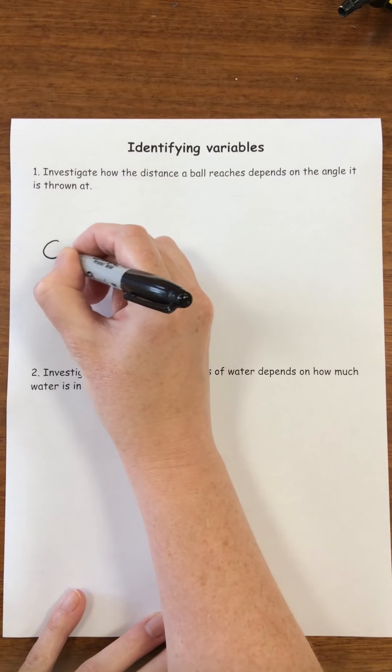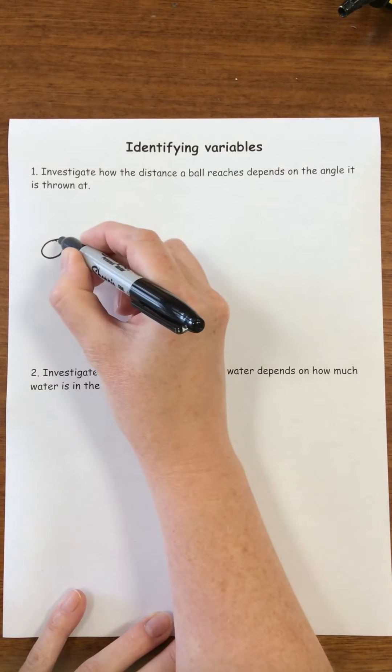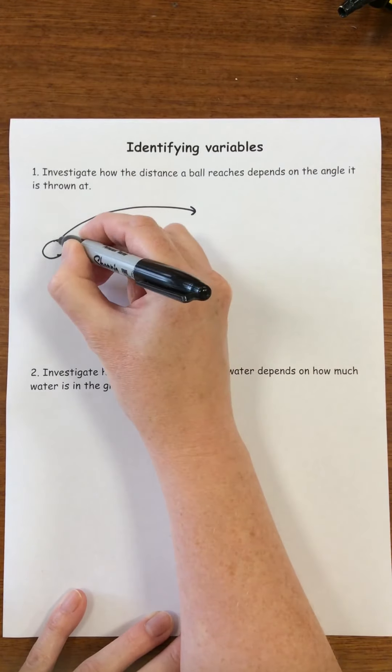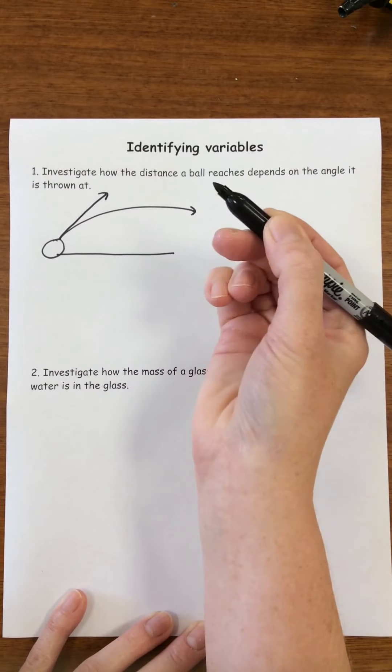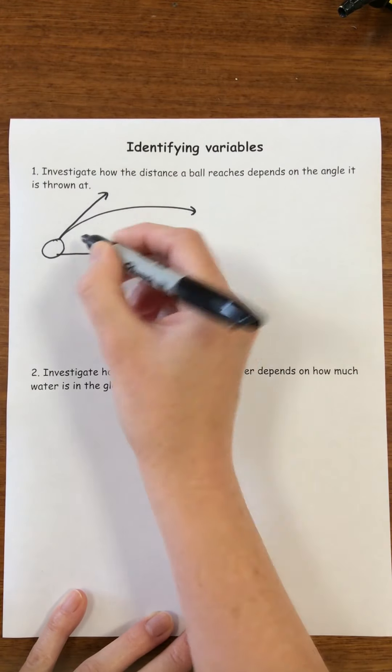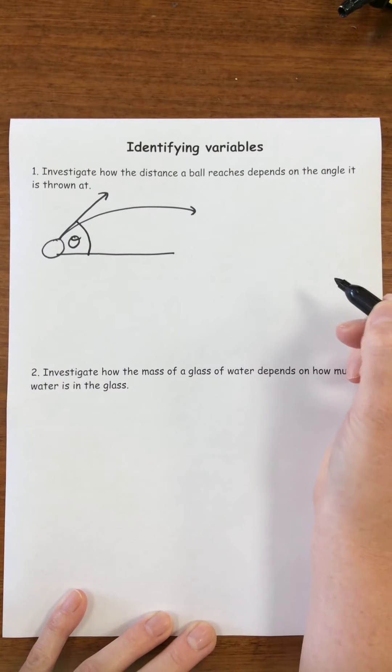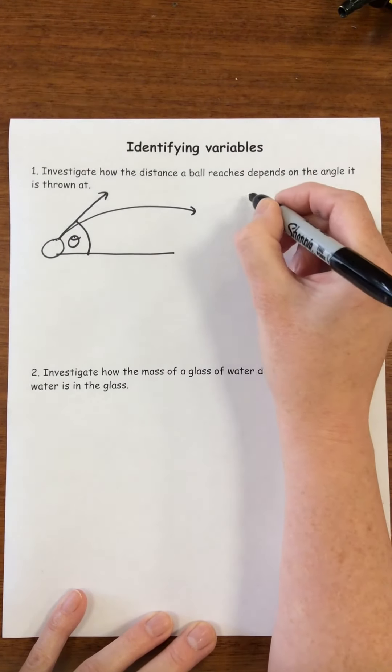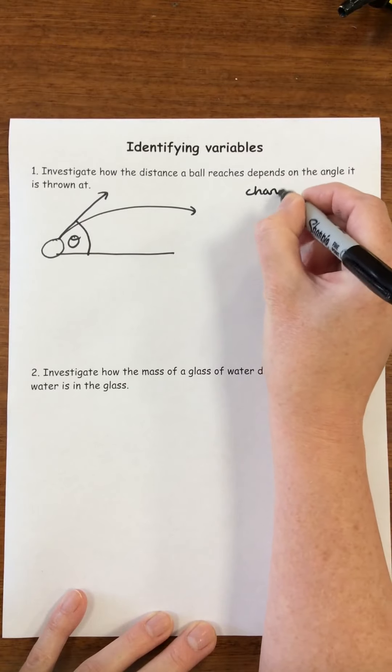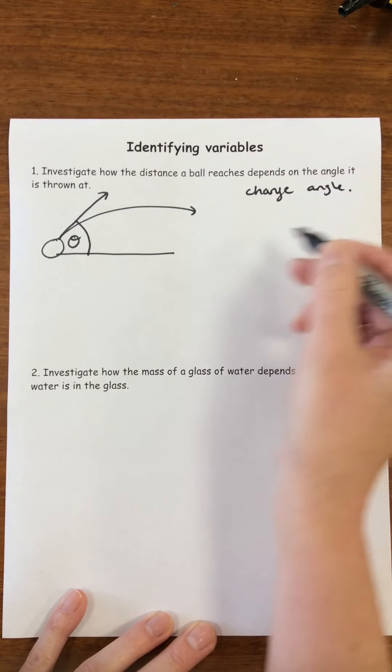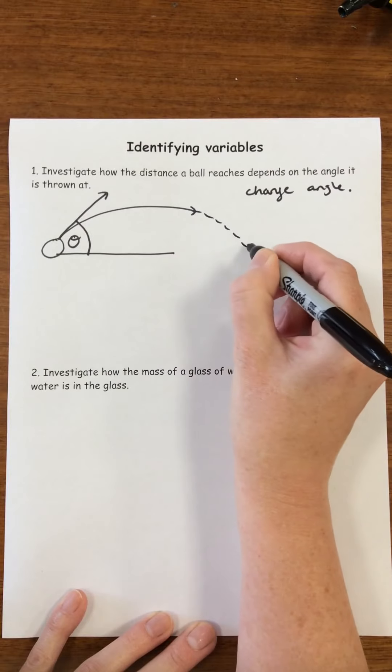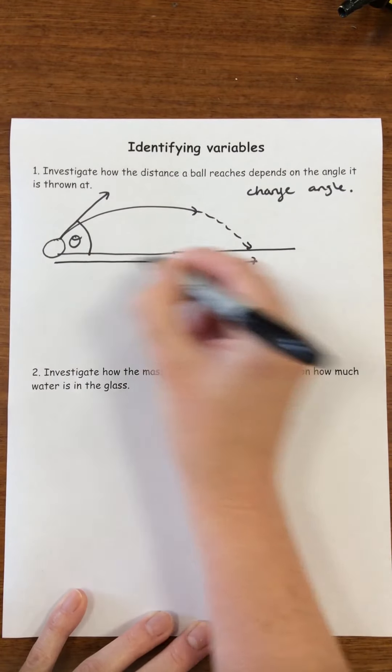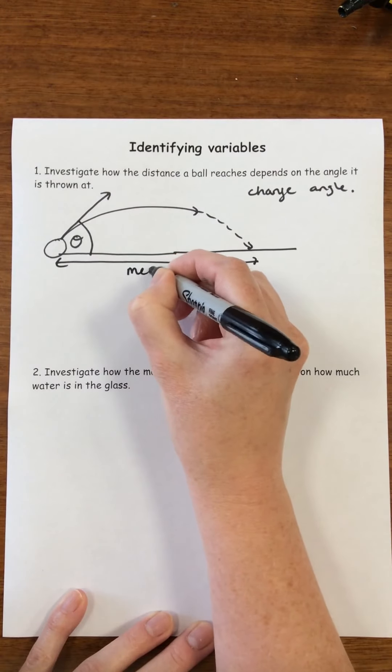So we're going to take a ball and we're going to throw it, but every time we're going to change the angle it's thrown at and we're going to change this angle every time. So already we're starting to think about the words. We're going to change the angle and then the ball's going to land over here somewhere and then we're going to measure this distance.